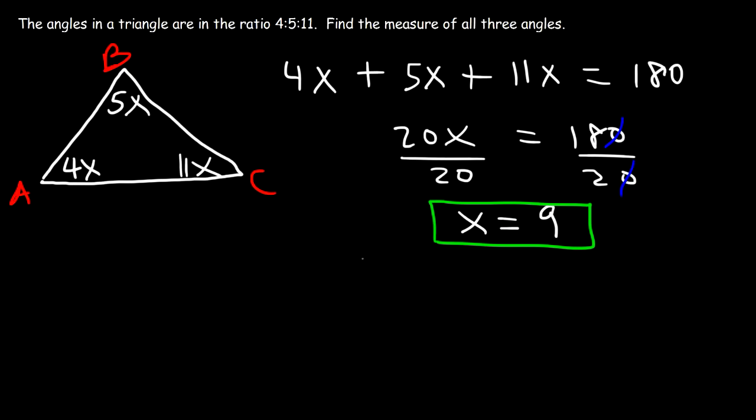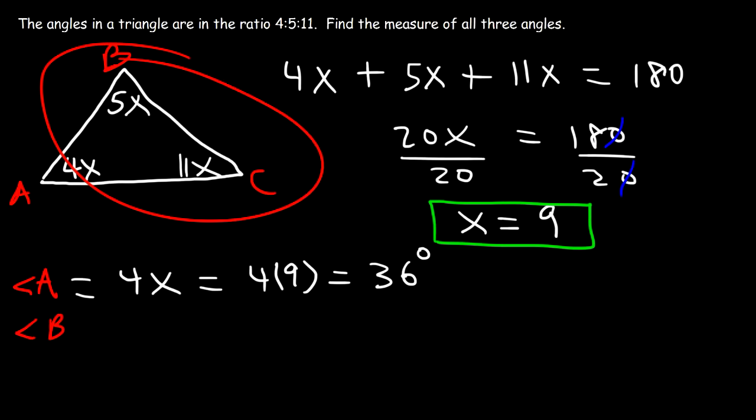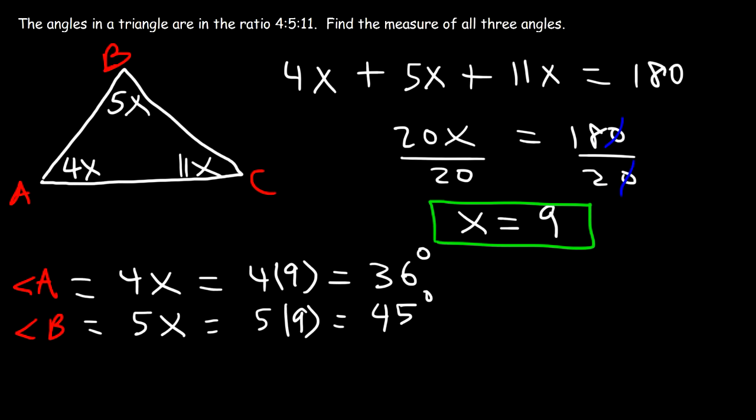Now that we have the value of x, we can find the measure of all three angles. So let's start with angle A. Angle A is equal to 4x, and x is 9. So 4 times 9 is 36. So angle A is 36 degrees. Now let's move on to angle B. By the way, this figure is not drawn to scale. Angle B is 5x. So this is going to be 5 times 9, which is 45 degrees. Angle C is equal to 11x. So this is going to be 11 times 9, which is 99 degrees. Now let's add up the three angles. If you add 36, 45, and 99, this will give you 180 degrees.